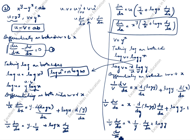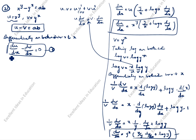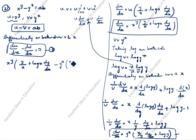dv by dx equals v times the bracket: x by y times dy by dx plus log y. Since v is y power x, dv by dx equals y power x times (x by y times dy by dx plus log y). This is the dv by dx value. We have du by dx and dv by dx. We will substitute into the equation du by dx minus dv by dx equals 0.